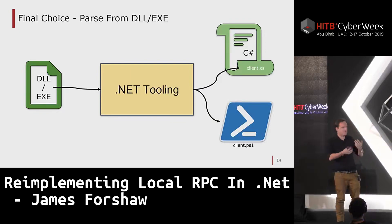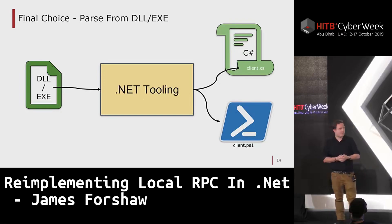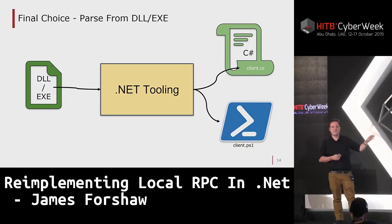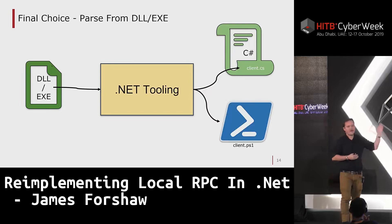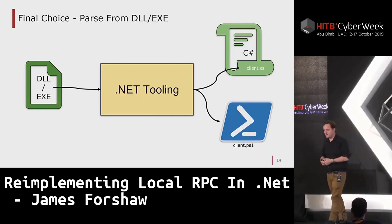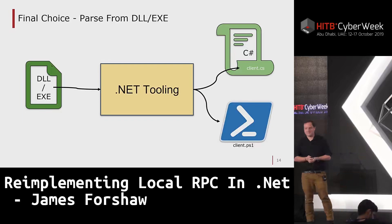This seemed like too much hard work. Even if I implemented my own MIDL compiler, I'd have to achieve feature parity with the Microsoft compiler. Instead, I thought: I already need to extract data from a DLL or executable — can I not just consume the DLL and executable directly rather than an IDL file, do some processing, and use that to generate .NET code? This is the approach I chose because it solved my direct problem.